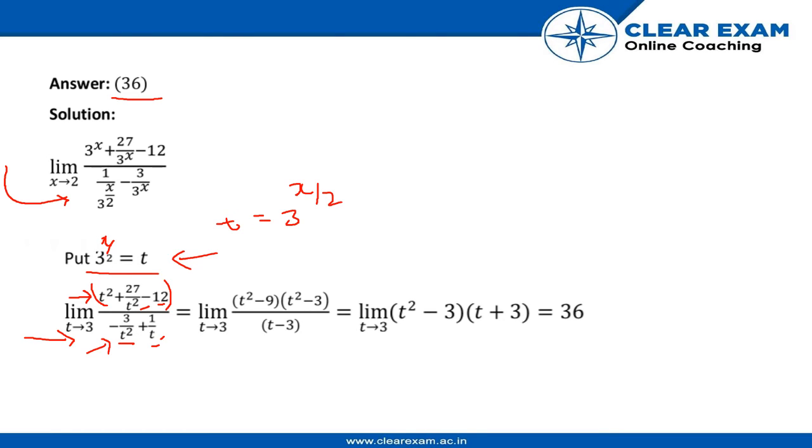And we get t square minus 9 and t square minus 3 by t minus 3, which is equal to limit t tends to 3, t square minus 3 plus into t plus 3, because t square minus 9 can be written as t square minus 3 square, which is t minus 3 and t plus 3.